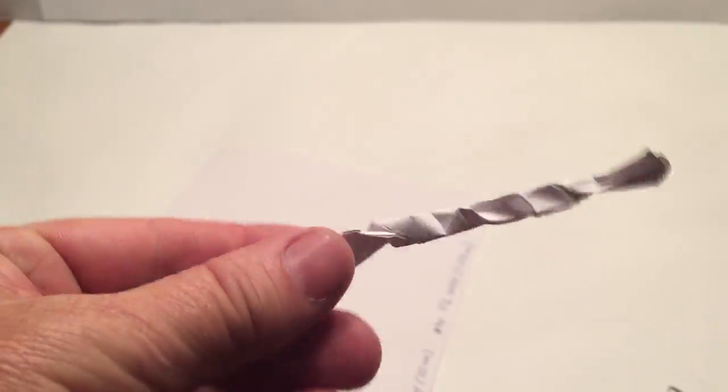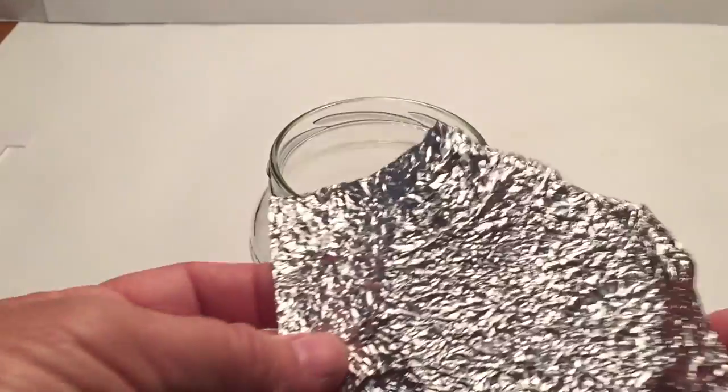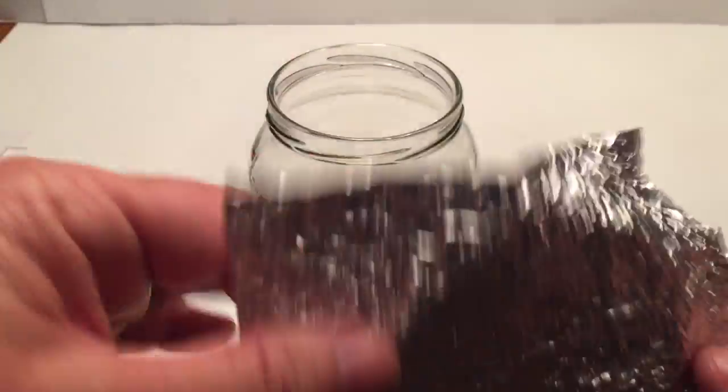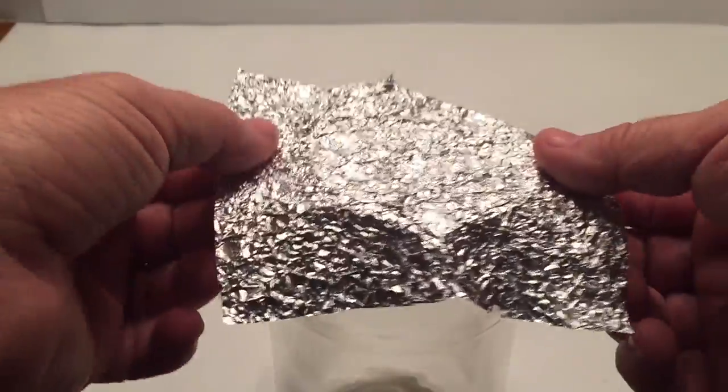Now we have our paper all twisted up and folded in half. We're going to take a regular jar, and we're going to take a piece of aluminum foil, and we're going to cut it out just the size of your jar.